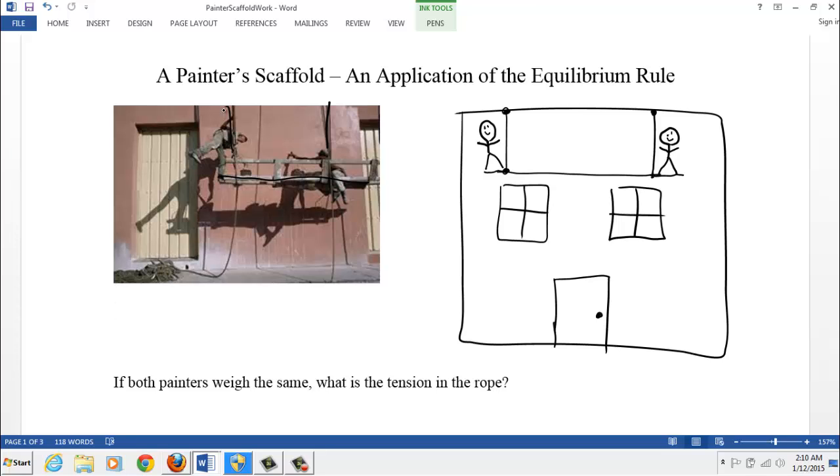Hi everyone, here's an application of the equilibrium rule. On the left side we have two guys painting a house, standing on this scaffold. On the right I drew it again, trying to be a little more simple about the whole construction. What we have to consider is the weight of this metal scaffold, the two painters, and it's held up by two pieces of rope.